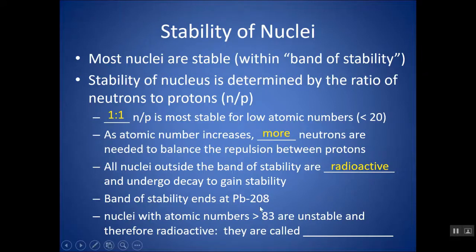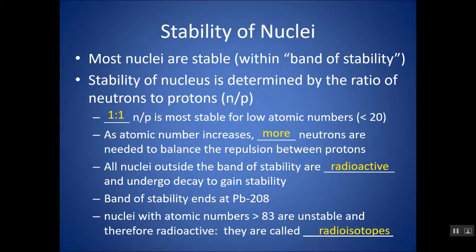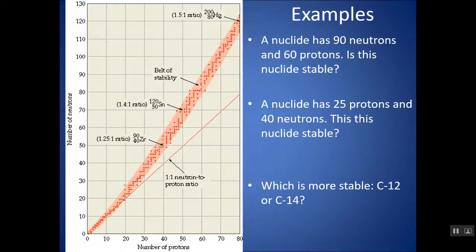Above atomic number 83, we really don't find any stable isotopes because there is no ratio that is stable. The repulsion between the protons becomes way too much at atomic number 83 and above, and they're all going to be radioactive. Any isotope that's radioactive we call a radioisotope — these are not stable and they're going to start to decay.